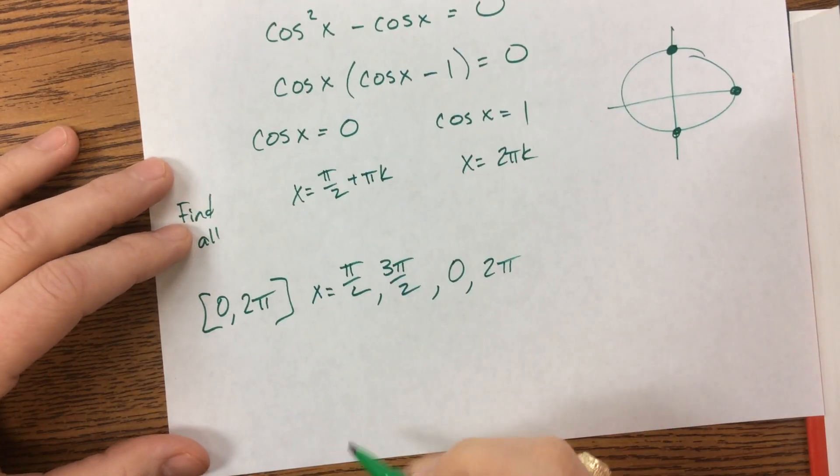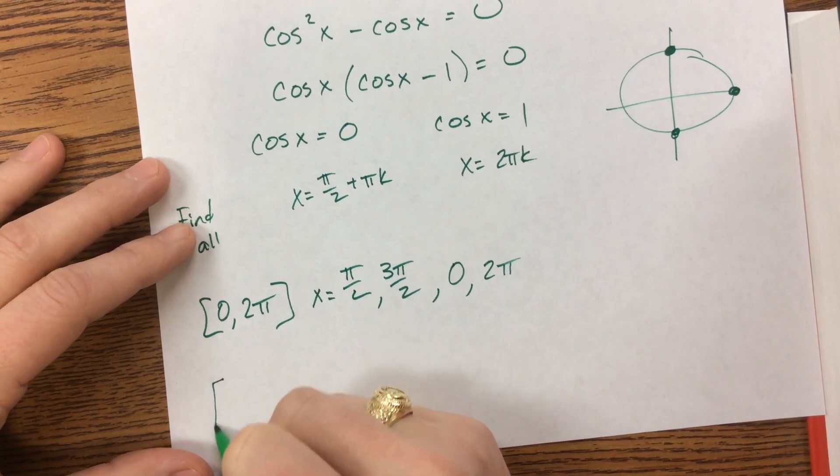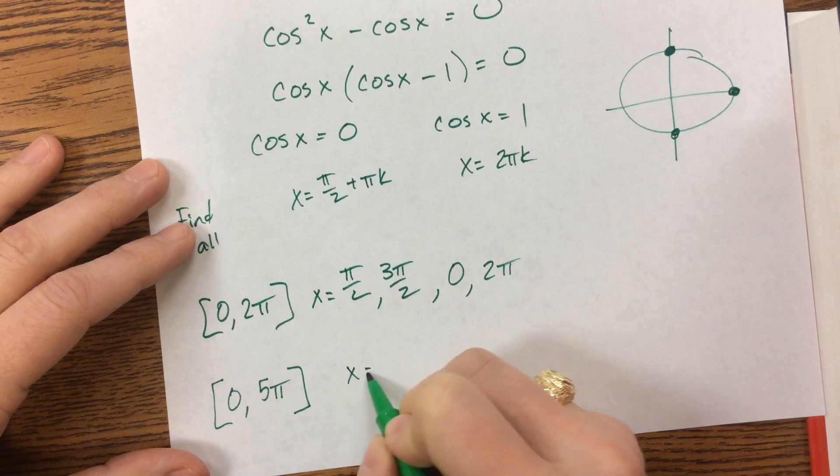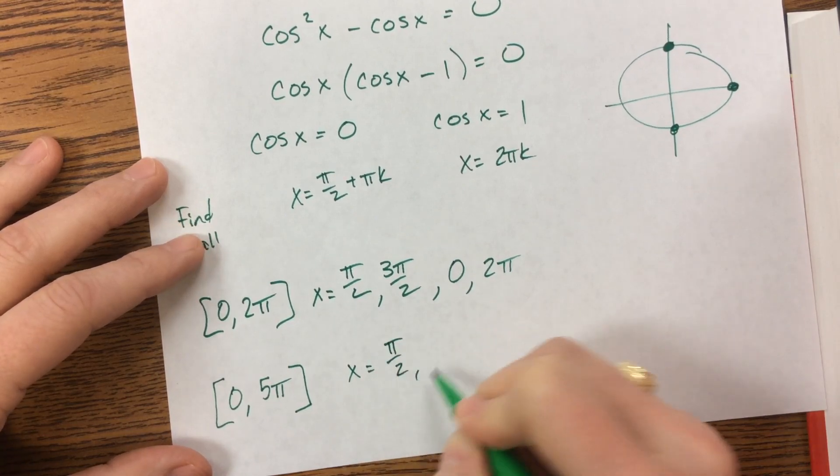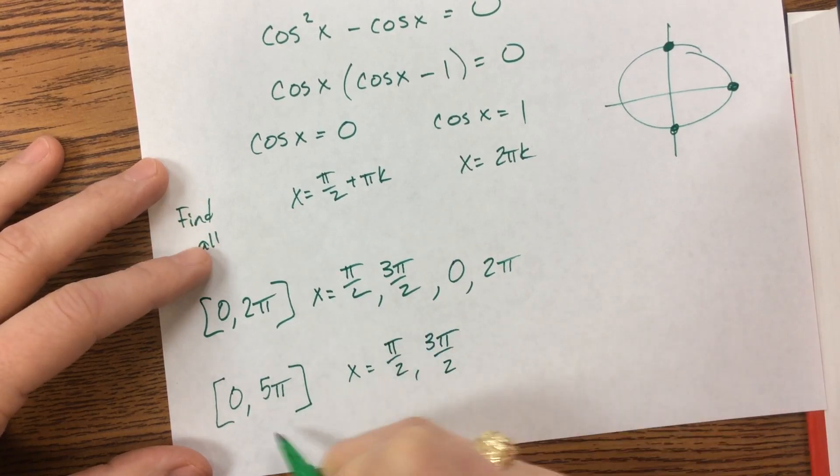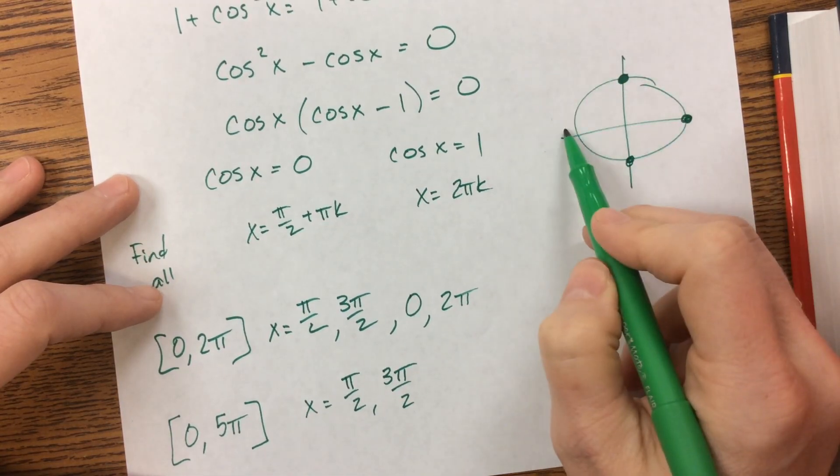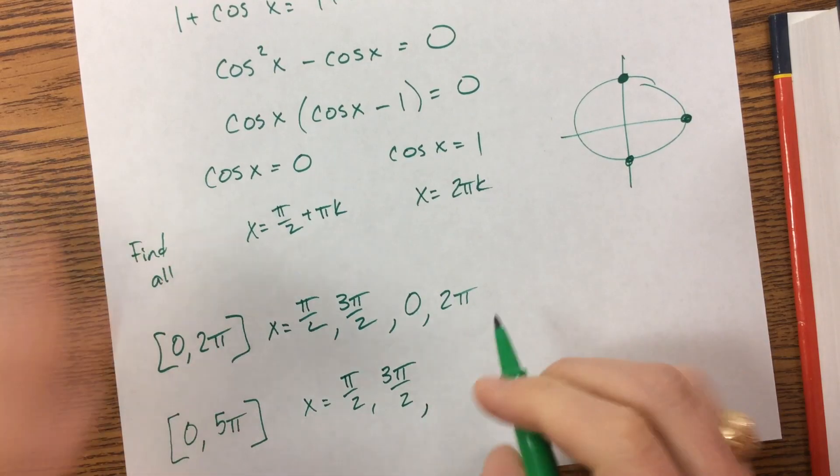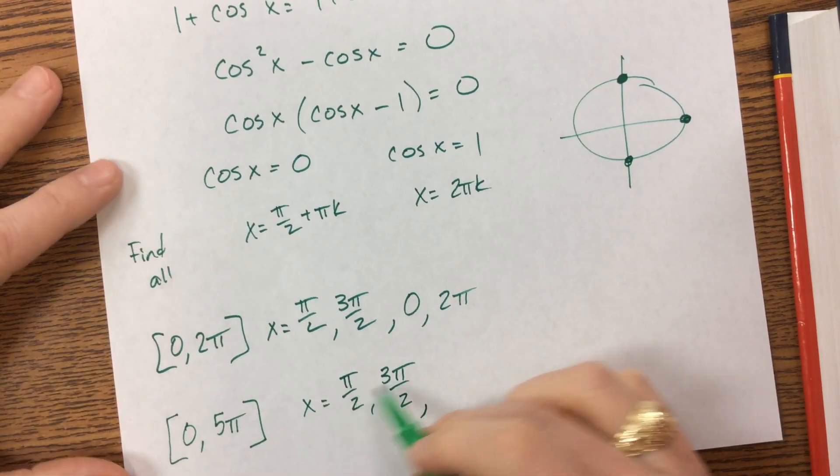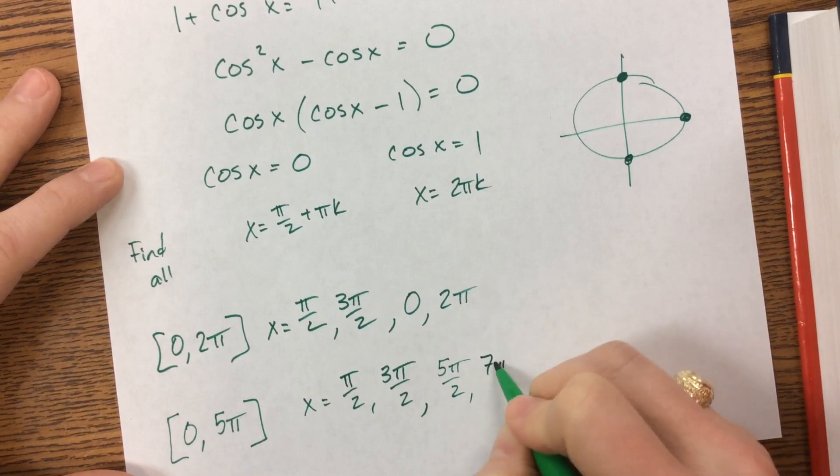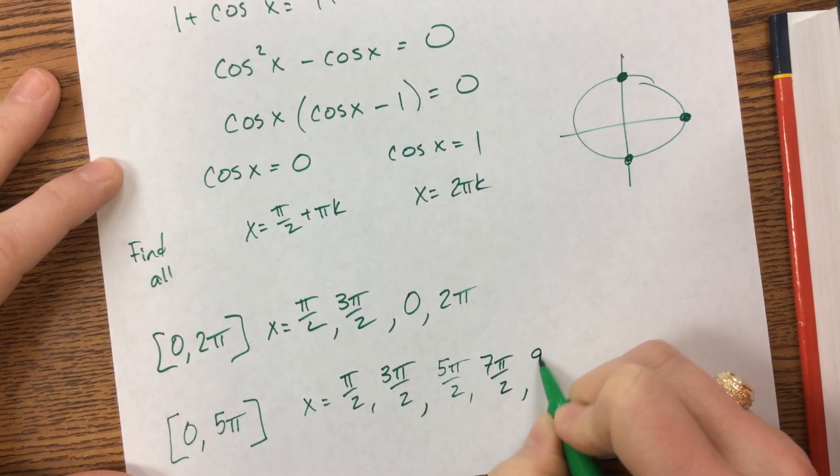If I had done something like on the interval from 0 to 5π, I'm just making something up. Well, I have π over 2, I have 3π over 2. But then 5π means that I'm going to go all the way around a second time and a half. So I can keep adding. So this is 1, 3. This is 5π over 2 would be the next one, 7π over 2 would still be in that world, 9π over 2.